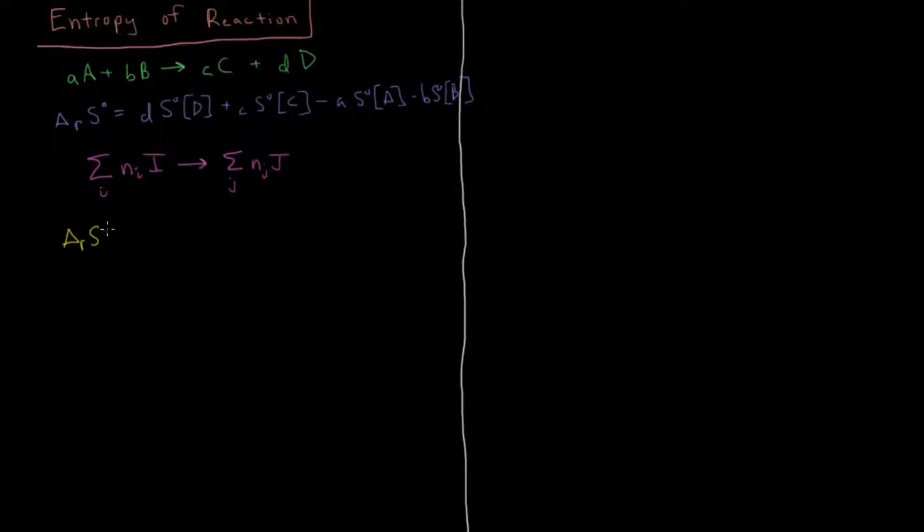Then for this reaction that I have written there, the most general way I can write it, the molar entropy of that reaction is going to be a sum over all species J, NJ molar entropy of all the products J, minus the sum over all the reactants I, molar coefficient for each chemical reactant, and then molar entropy of each species I.